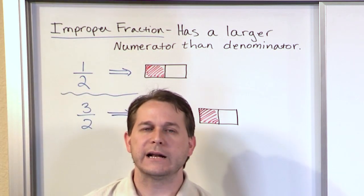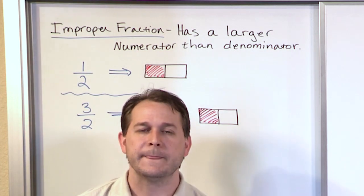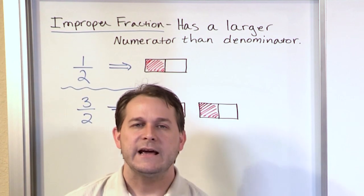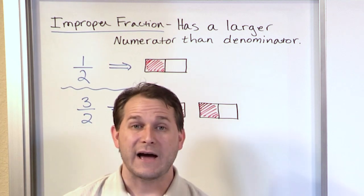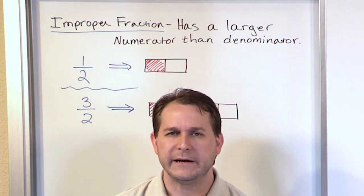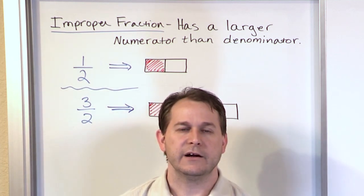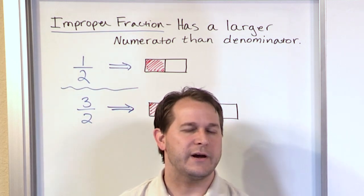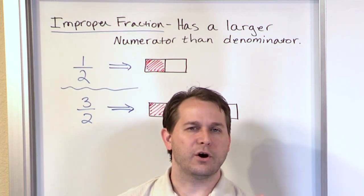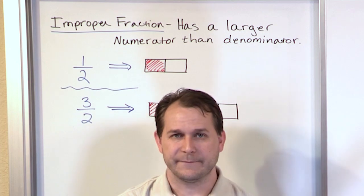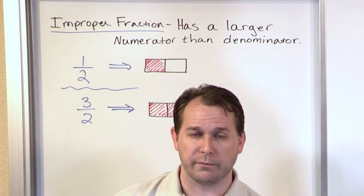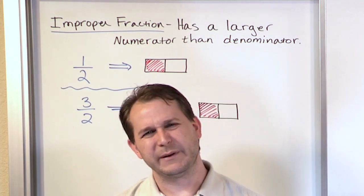The bottom line to take away is that when you have an improper fraction, what it represents is when you're trying to describe having something greater than one. Improper fractions always mean that you have more than one of something. Normally with fractions like two-thirds or three-fourths of a pizza, you have less than a whole pizza. But any time you have an improper fraction, it's always representing more than a whole — that's why it's a little bit improper.